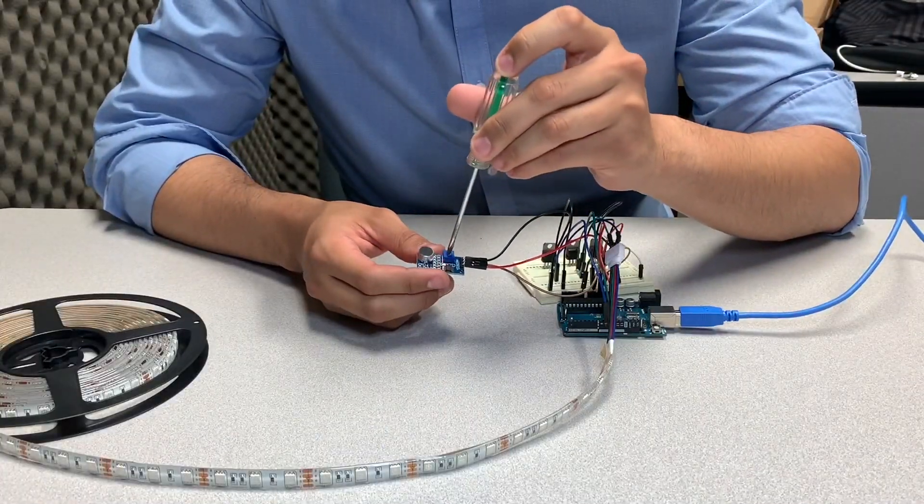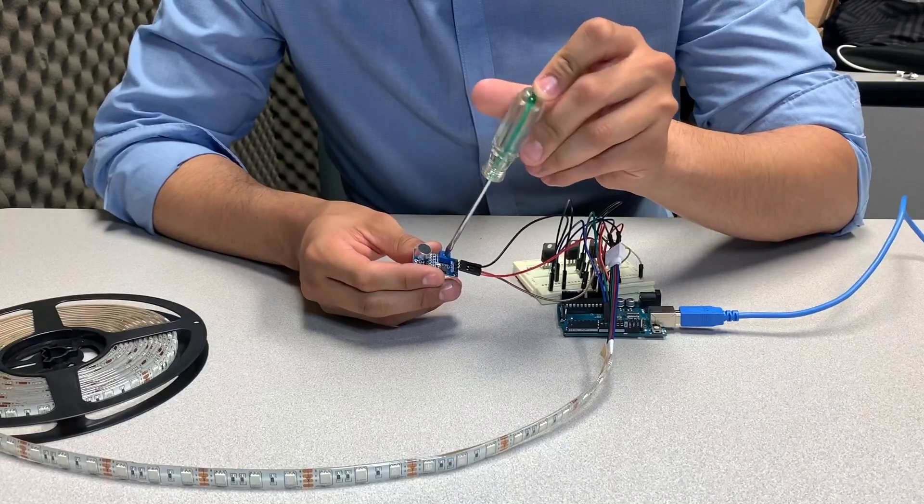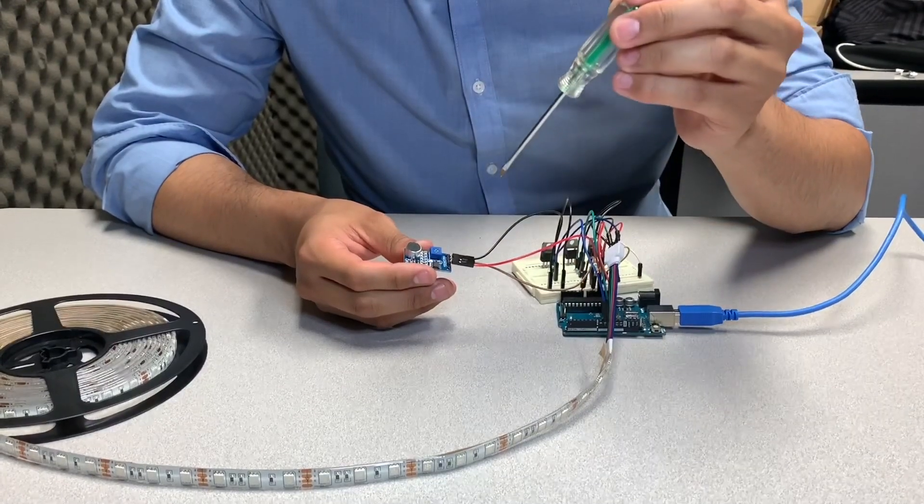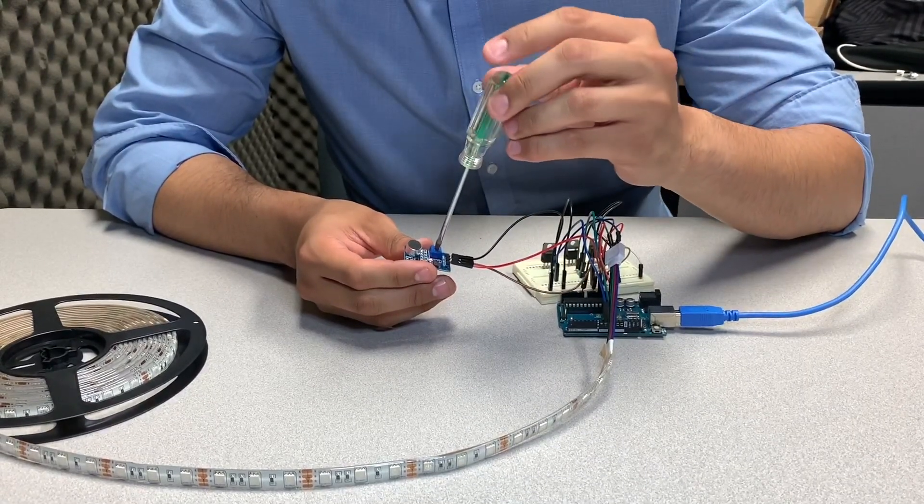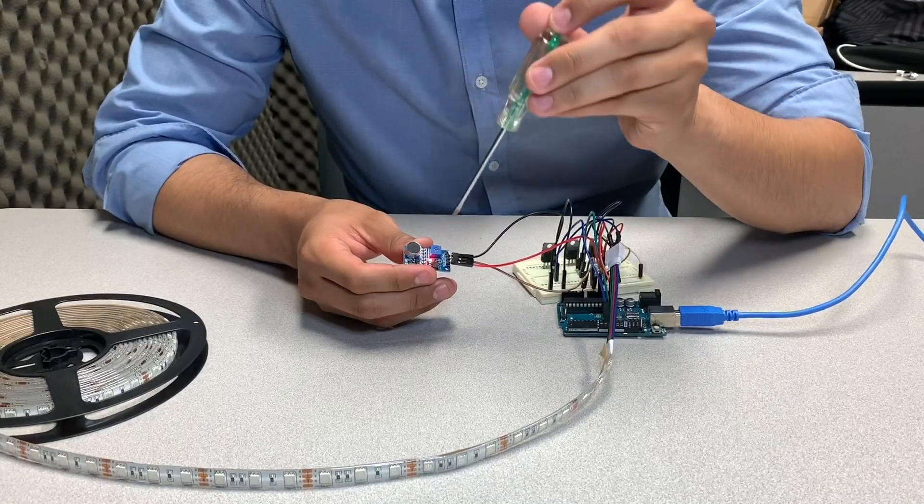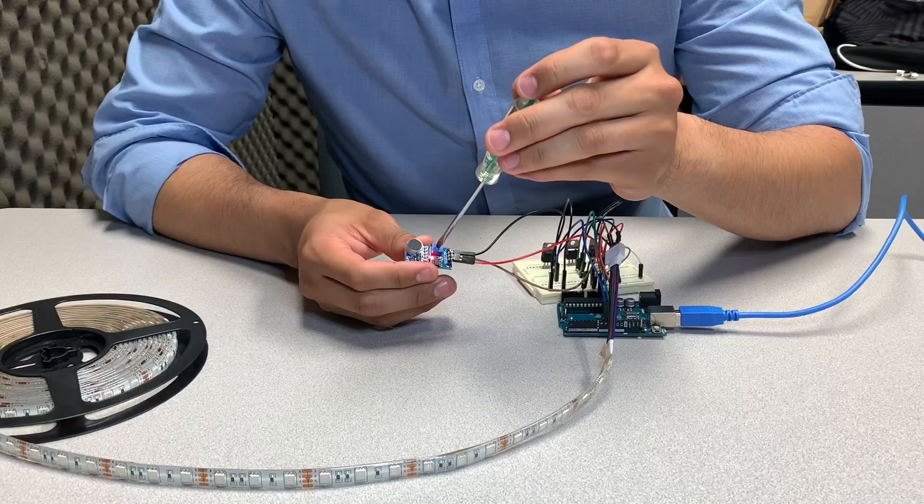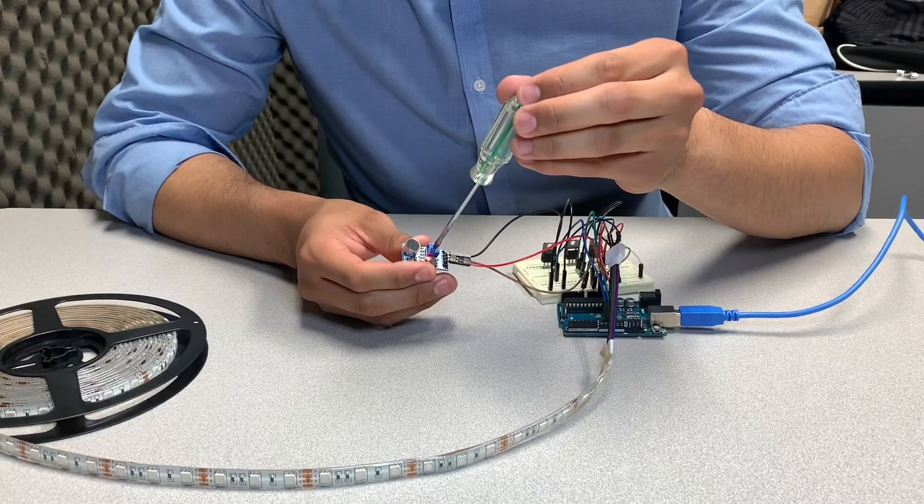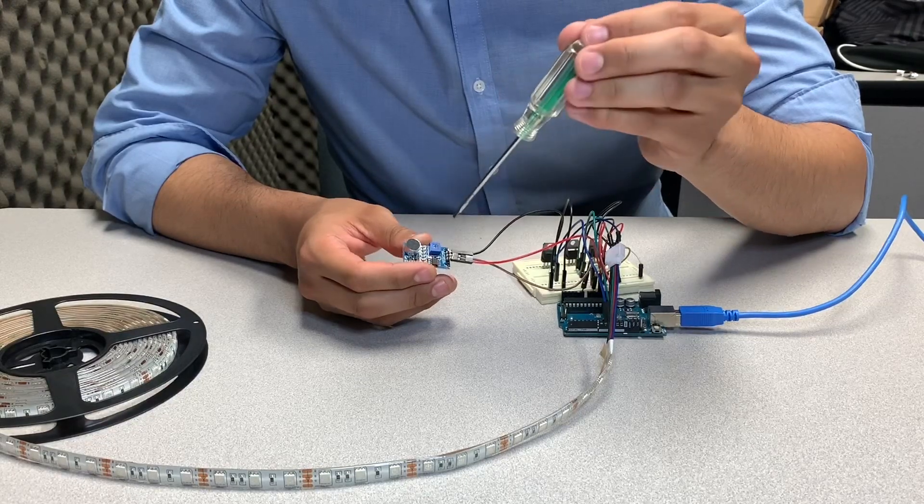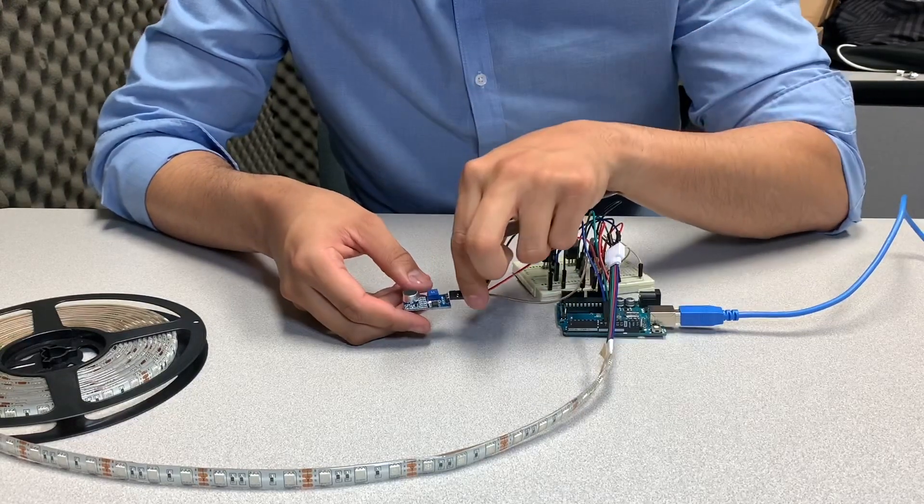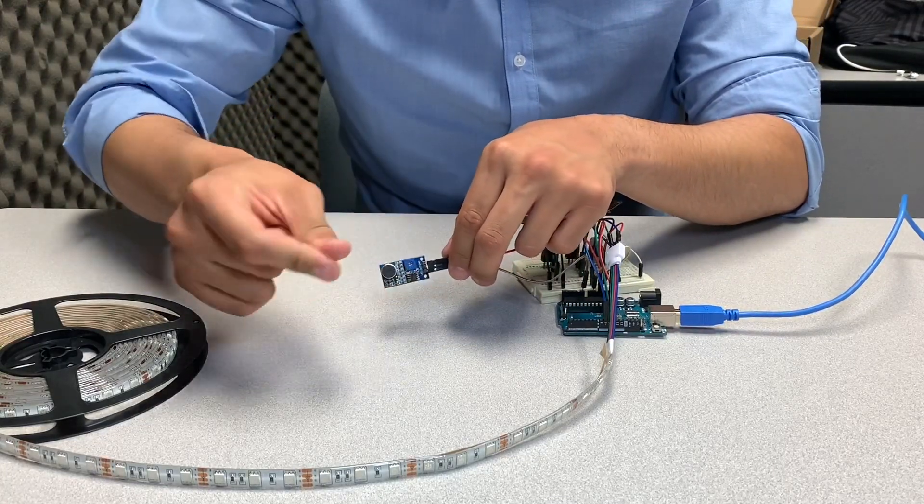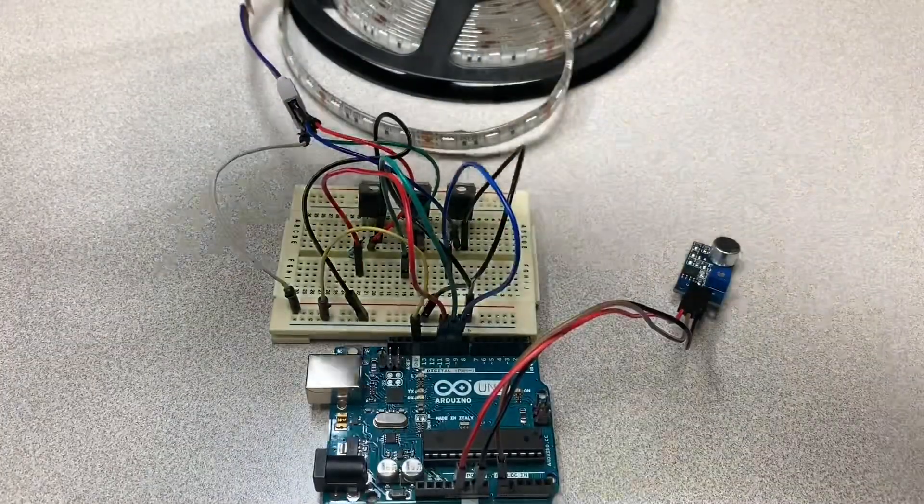Now, we're gonna calibrate our sensor. It has a potentiometer, which is rotative. And we're gonna adjust it to see how sensitive we need it. To confirm our calibration, we're gonna snap our fingers and see how sensitive it is. You can notice a red LED just popping up every sound we make.